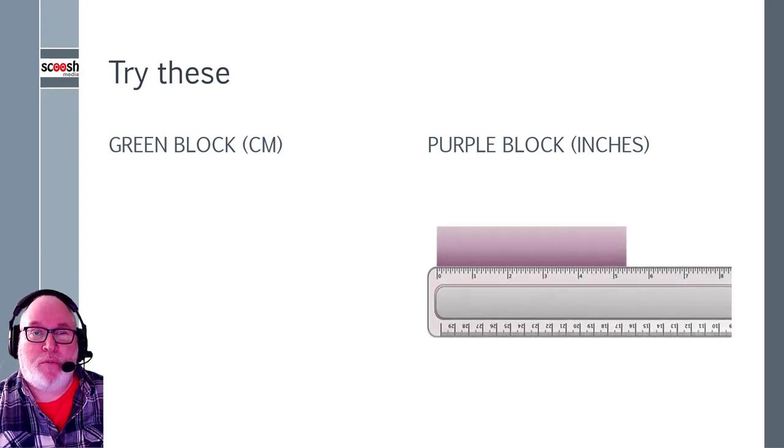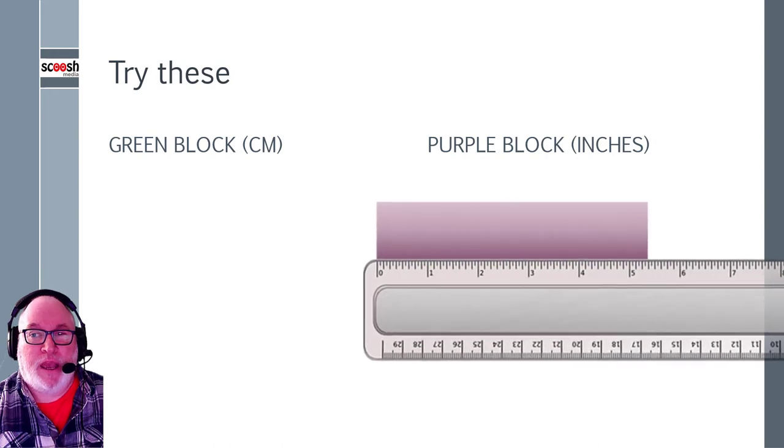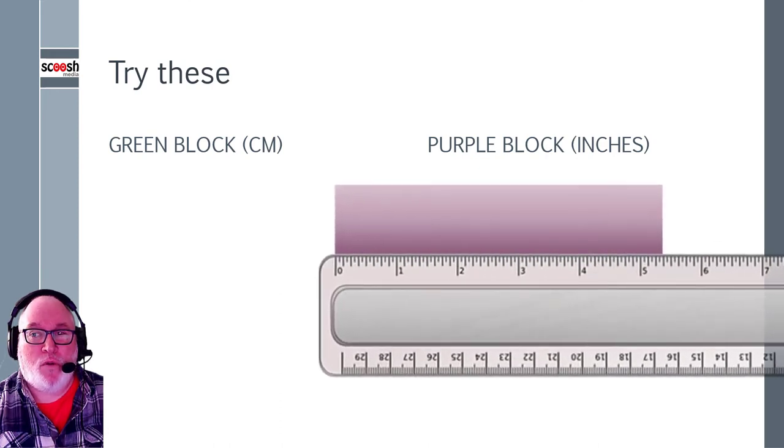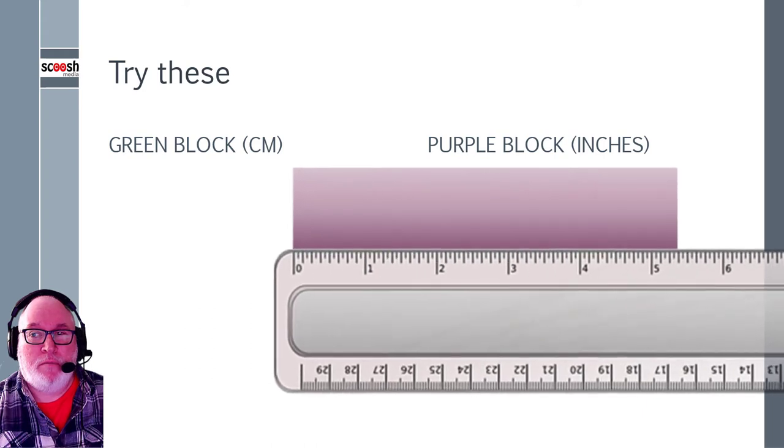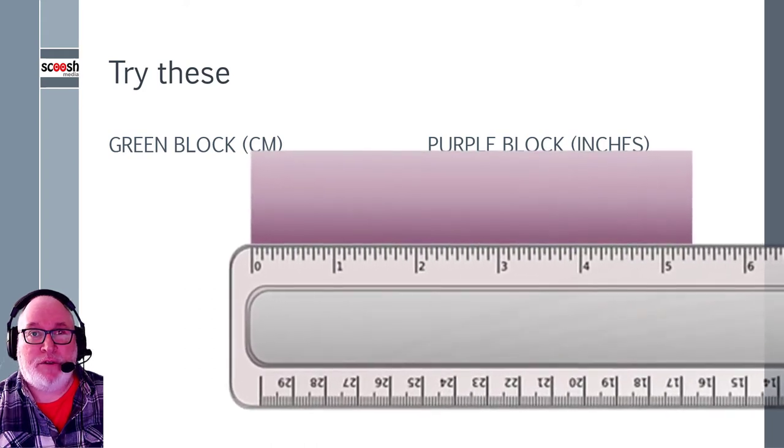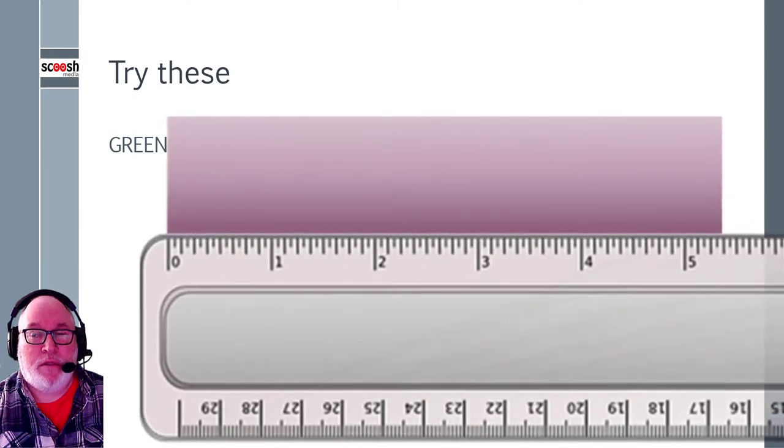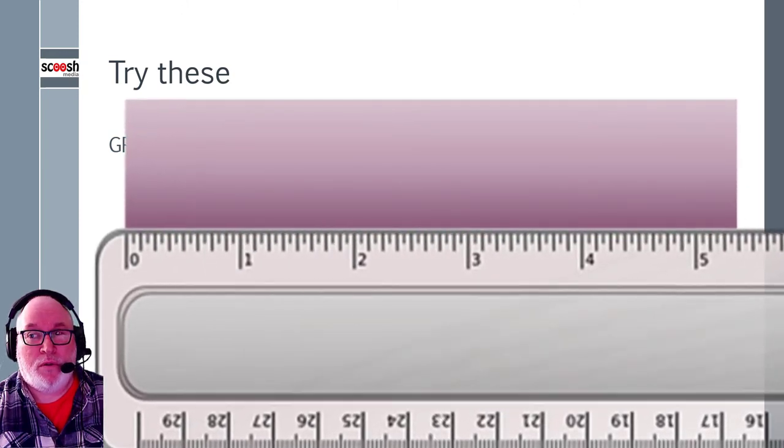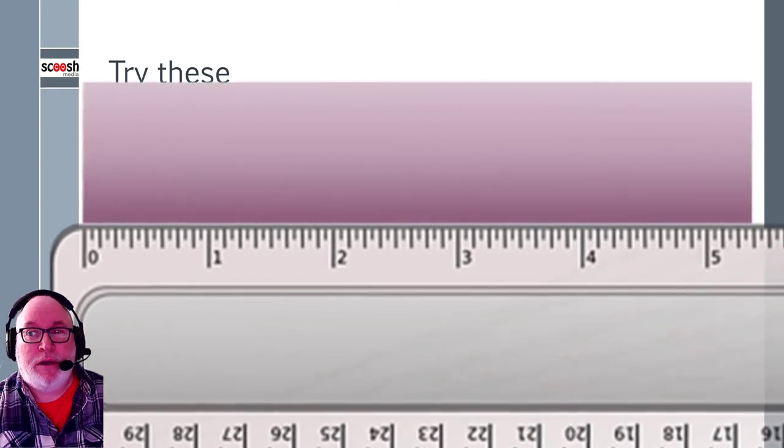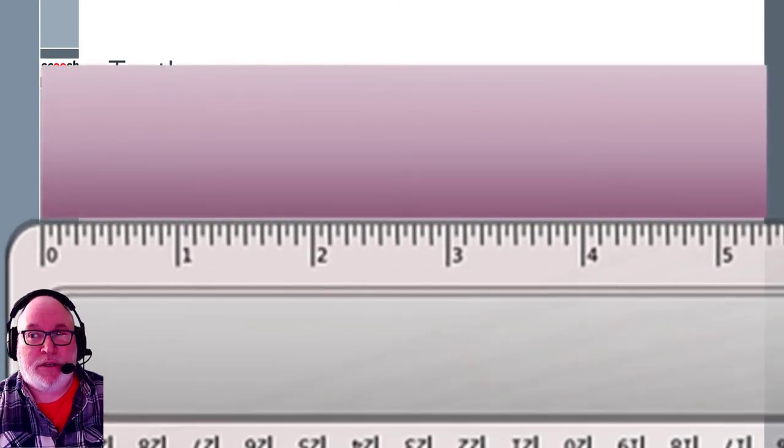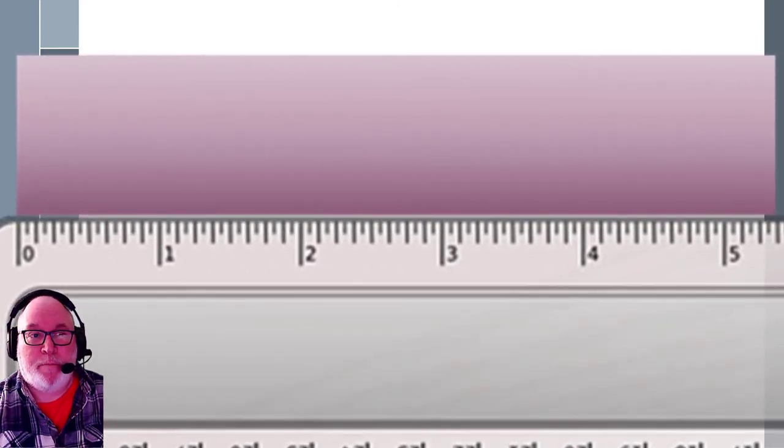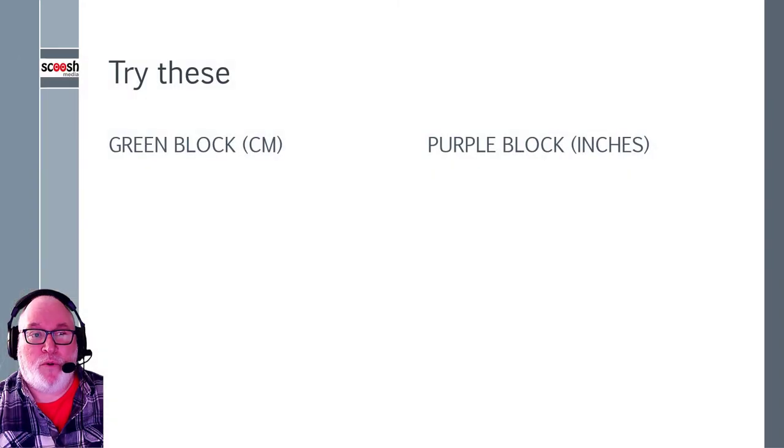Then think how you write it for centimeters. Now we'll try the purple one. Let's have a closer look. So again, it's passed the whole number. And how many of the major markings has it passed? Remember, how many of them are there in total between numbers? And how many does this go past? Again, make a note.